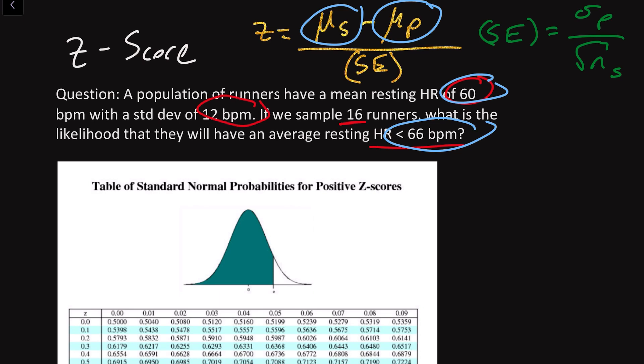Next, what we want to do is identify which terms in here are going to correspond to our standard error formula. That's going to be the sigma_P, the standard deviation of our population, which was 12, and our sample size was 16. With all this, we can now begin to determine what our Z value is. From there, we're going to look it up in a table to see what this probability ultimately is.